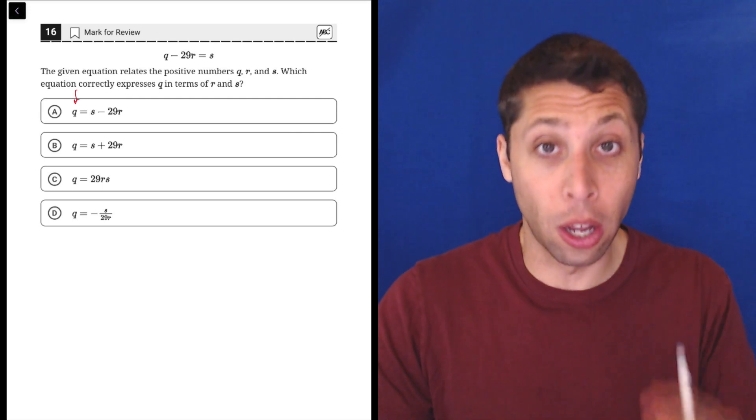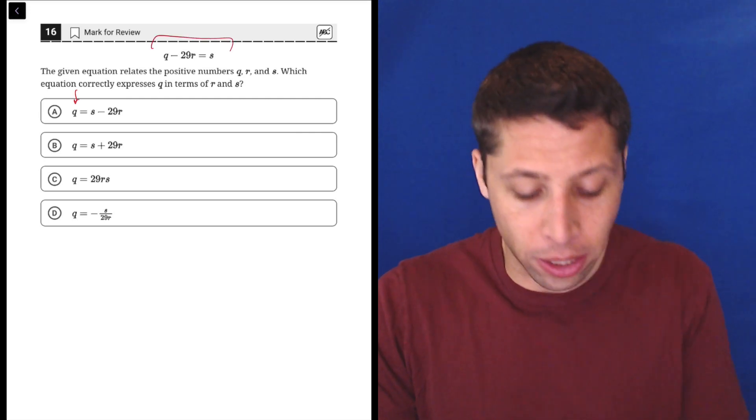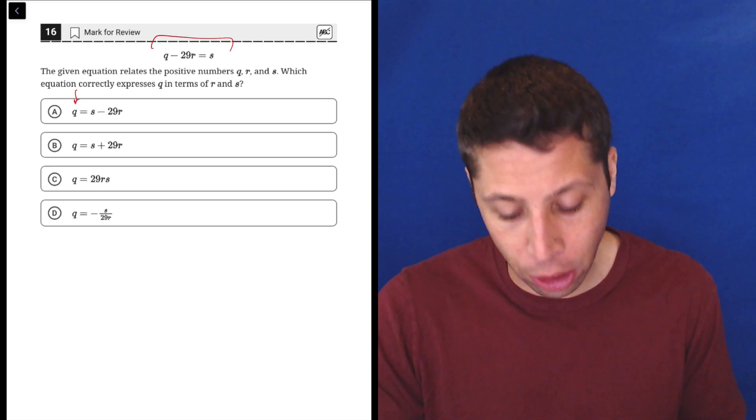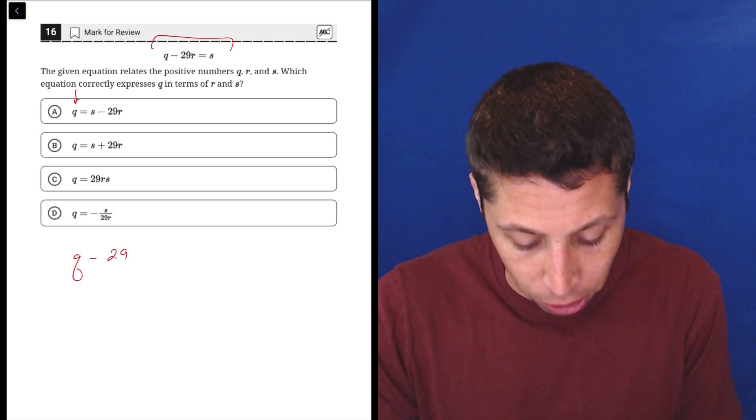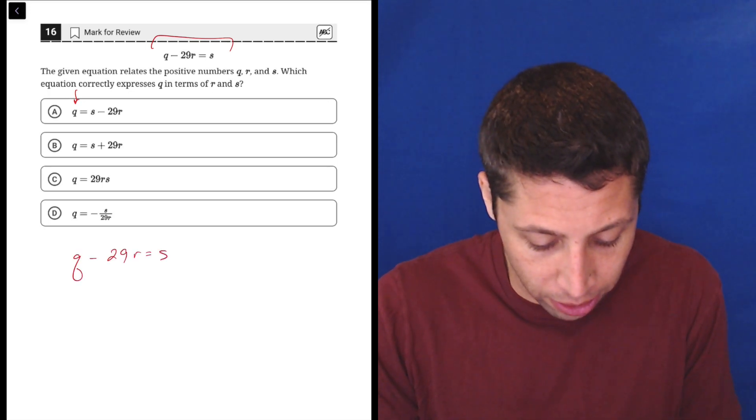We need to get Q alone. So if I'm looking at this starting equation I'm like, okay what's in the way here? How can I get Q alone? Let me write it down here: Q minus 29R equals S.